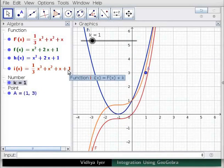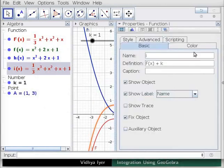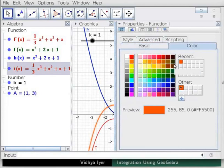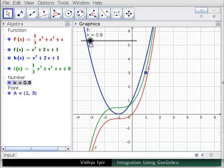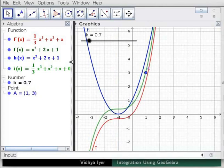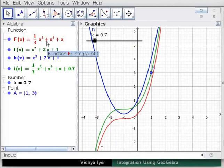In algebra view, double click on i(x) and on object properties. Click on color tab and select green. Close the preferences box. Drag k to make i(x) pass through point A. Drag the boundary to see i(x) properly. This function is capital F(x) plus 0.7.